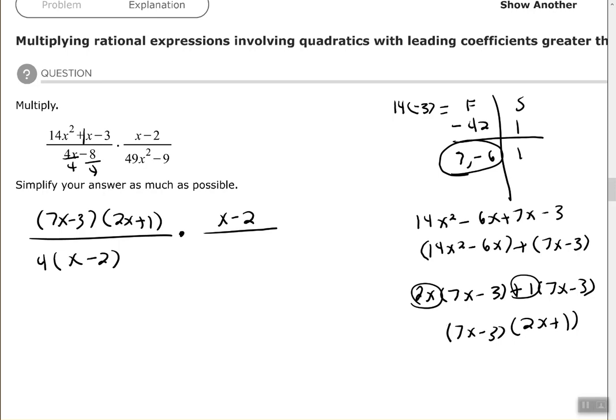My denominator, my second denominator there is 49x squared minus nine. So I have a difference of two perfect squares, subtraction of two perfect squares. So 7x plus nine, 7x plus three times 7x minus three.